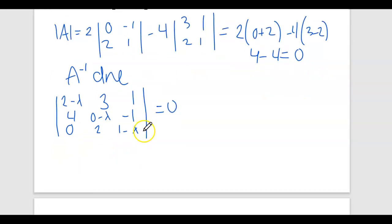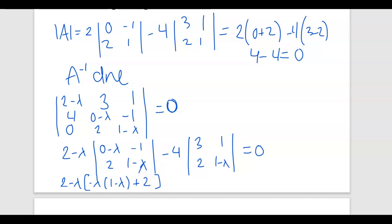So let's go ahead and figure out this determinant. I have 2 minus lambda, and then minus 4 times this here, and I'm going to let that be equal to 0. All right, that gives me 2 minus lambda times negative lambda times 1 minus lambda, plus 2 minus 4 times 3 times 1 minus lambda minus 2.